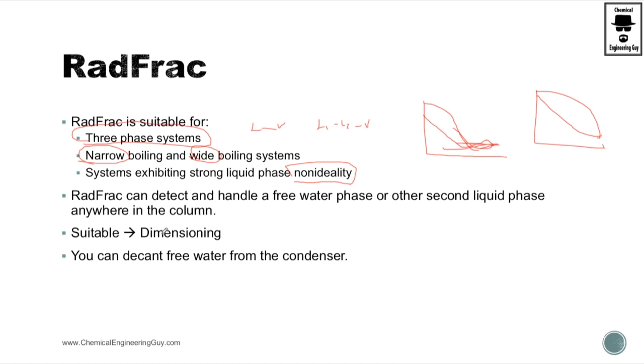Now, the interesting part on RADFRAC is that it's very good for dimensioning. So, once you get your results, you can verify the size, the diameter, and calculate the height of the column. Because we already got the feed stage, total number of stages, size between stages, duties of reboiler and condenser, and so on.